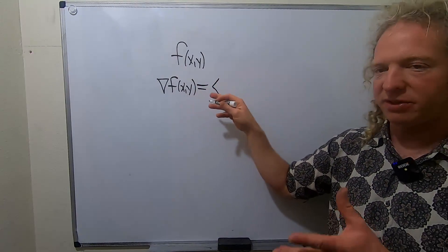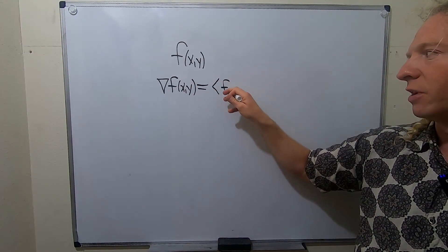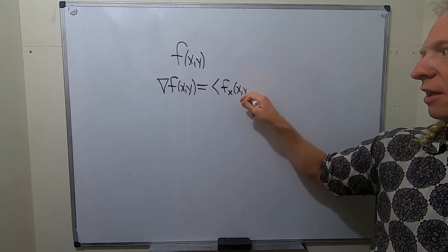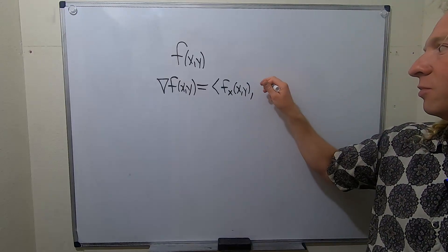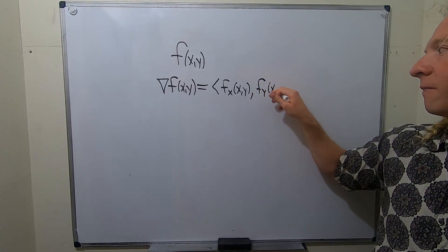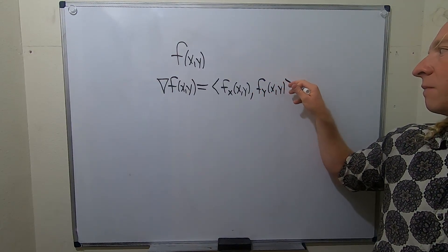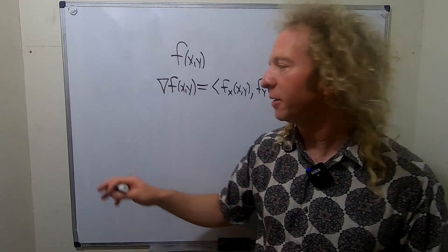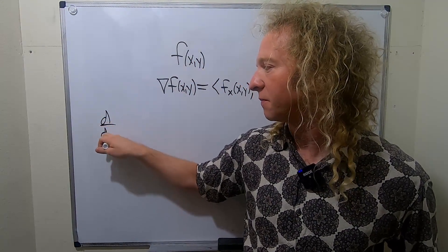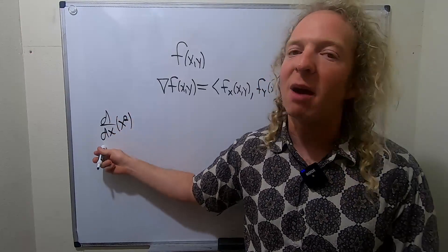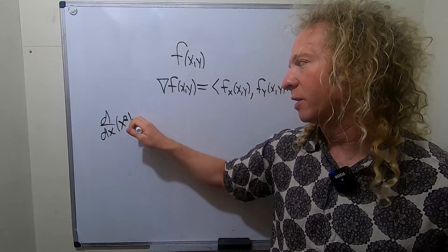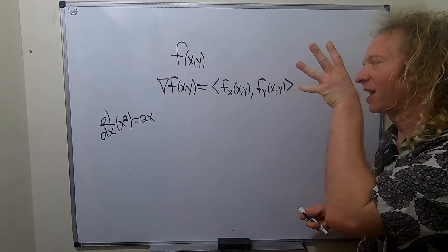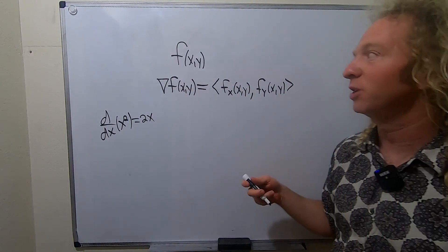The output is a vector of partial derivatives. The first component is the partial with respect to x, and the second component is the partial with respect to y. So it takes a function and spits out a vector — kind of like d/dx of x squared is an operator. You plug in x squared, it spits out the derivative. You plug in a function, it spits out a vector that contains derivatives.